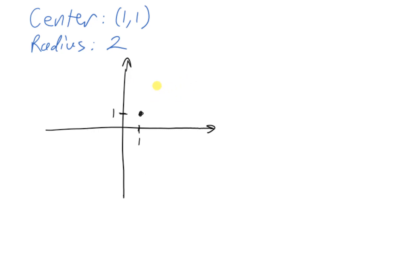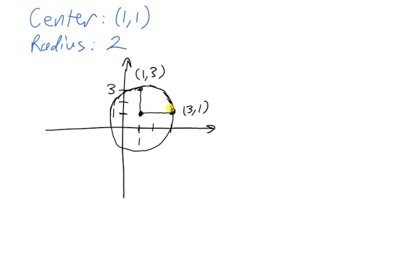To be a little more accurate, let's draw a radius of length 2 going horizontally — going over 2 units — so this point would be at (3, 1). Then let's draw another radius straight up 2 units, landing at (1, 3). This gives a relatively accurate idea of what the circle looks like, and I can trace it out from here.